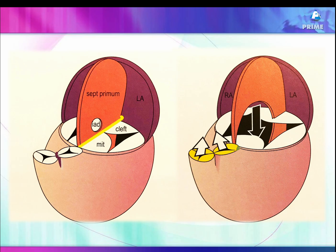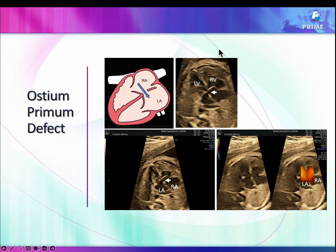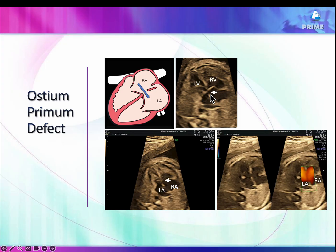Before that, if you have a secundum ASD it's somewhere in the middle of the septum, but the primum ASD involves the entire septum of the primum area, so it's a very large ASD even if it looks small on 2D. This is what a primum ASD looks like — it's happening at the level of the crux, both AV valves are at the same level, the RA and RV are dilated, and you see a defect at the crux level.